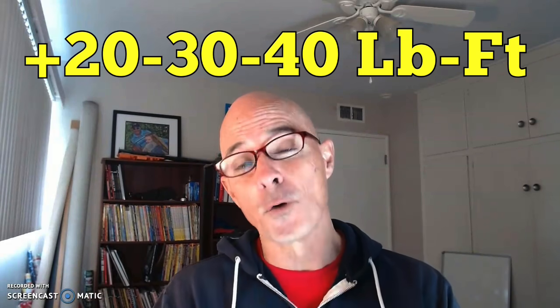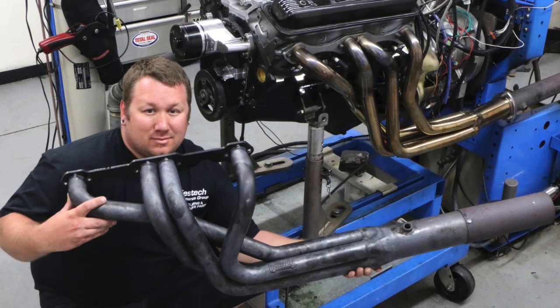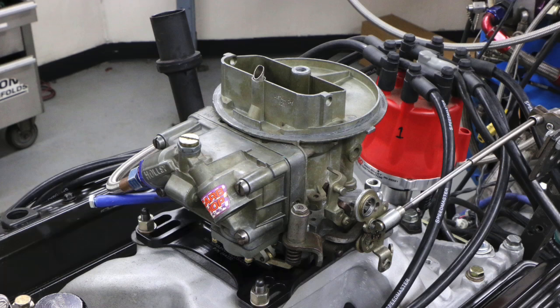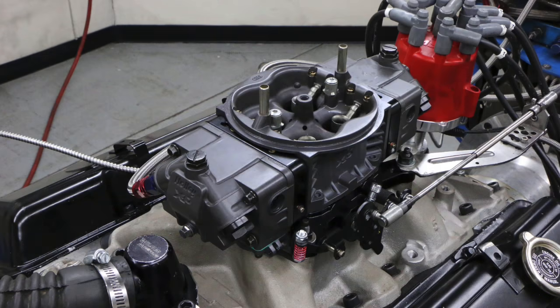In this video we're going to take a look at a comparison between a Holly two barrel carburetor and a Holly four barrel carburetor. Not just any Holly two barrel, but the 4412 class specific 500 CFM two barrel.